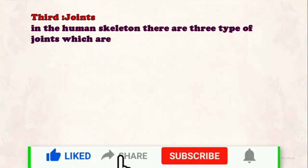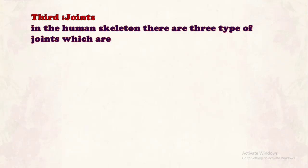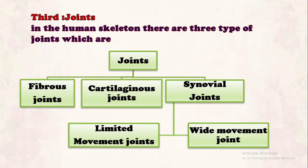The third part of the skeletal system is the joint. A joint is a position between two bones that allows movement of the bones. In the human skeleton, there are three types of joints: number one, fiber joint; number two, cartilaginous joint; and number three, synovial joint. They can also be divided according to function into limited movement joints and wide movement joints.